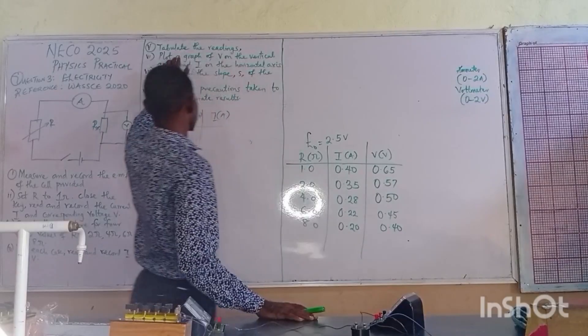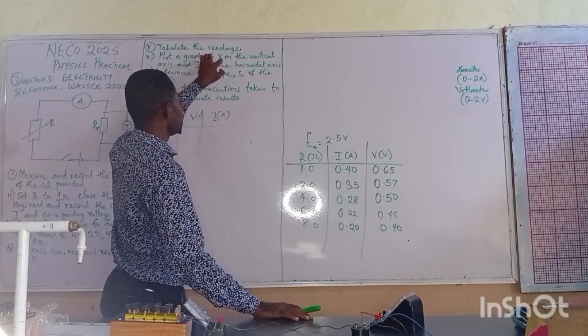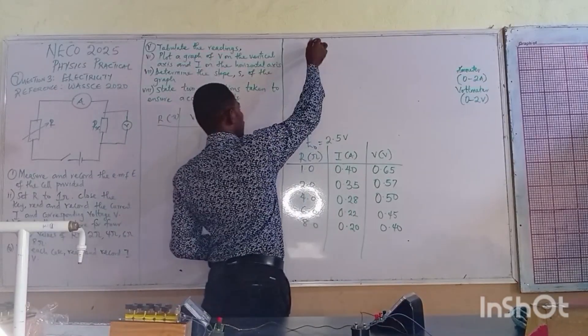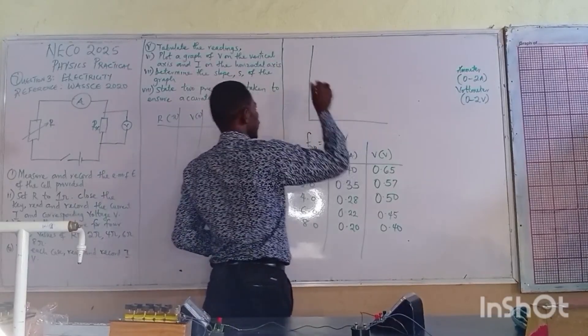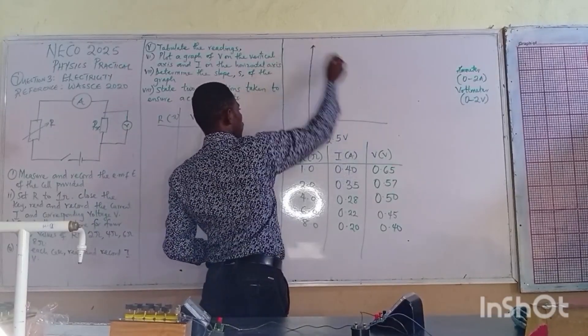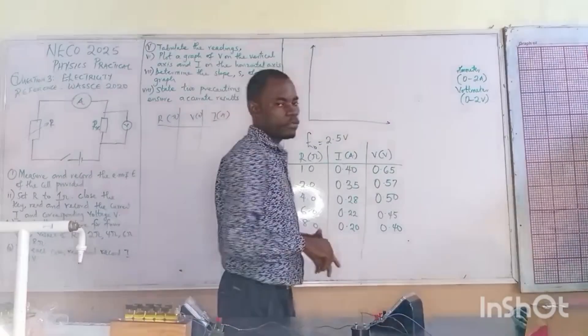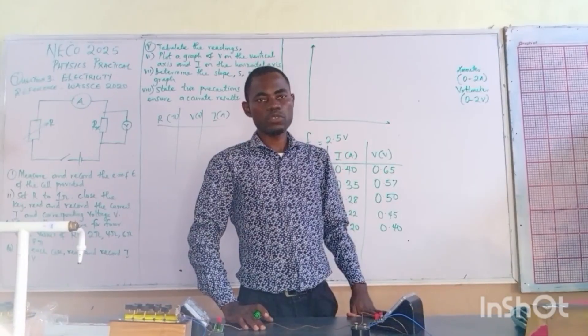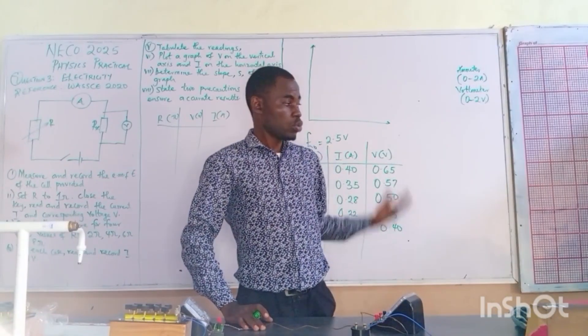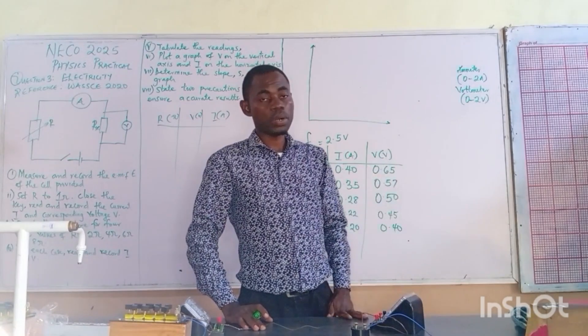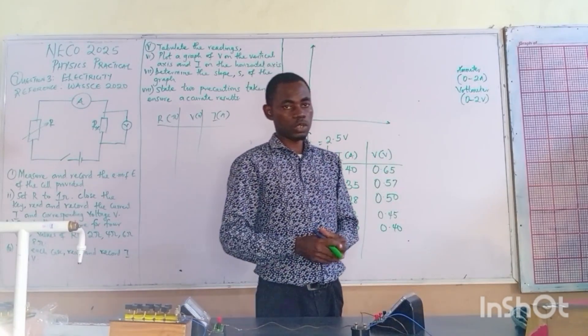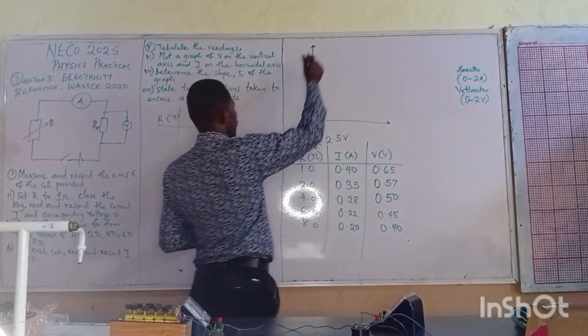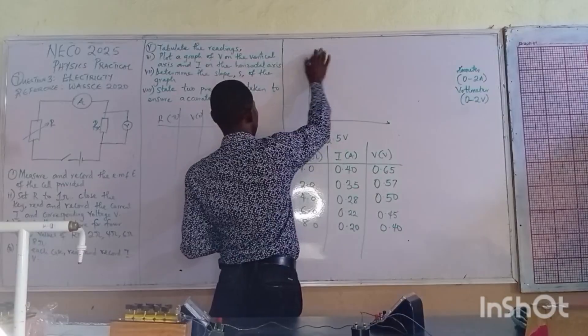They say plot a graph of V on the vertical axis. That's what I want to do right now, I want to plot the graph. Before you talk about plotting the graph, please watch our videos on plotting of graphs. We did like two or three videos on graph. If possible I will still do another video right now on graph properly.